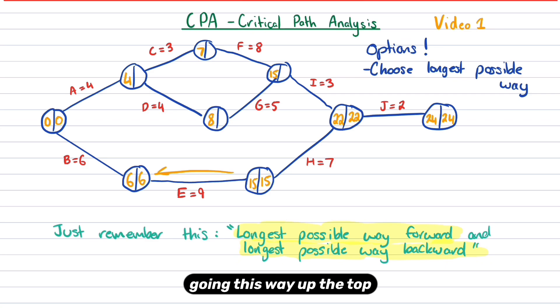Now going this way up the top, we've only got one option, right? So 22 take away three is 19. And then once again, we've only got one option going backwards this way. So 19 take away five is 14. Then we've only got one option going back. So 19 take away eight is 11.